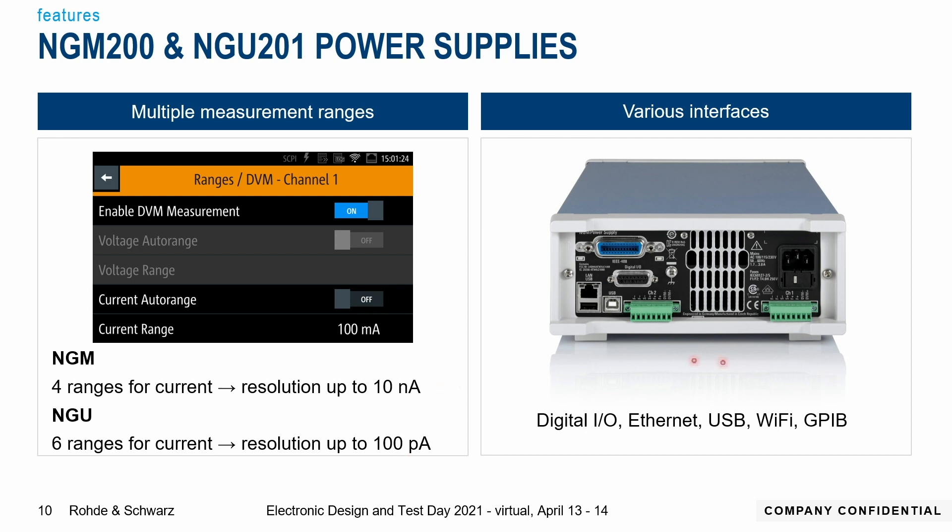Last but not least, the NGM and NGU have various interfaces that make it very easy to communicate with other instruments or connect to software or a PC. These include digital inputs and outputs, USB, Ethernet, Wi-Fi, and if needed, also GPIB.